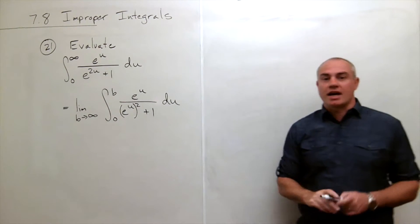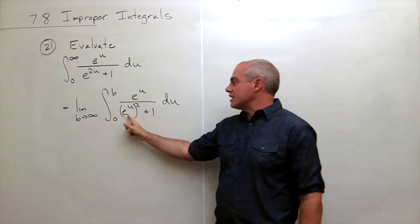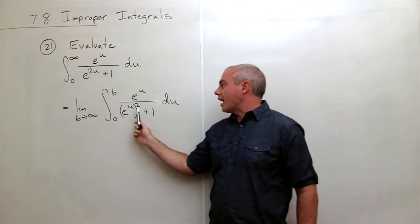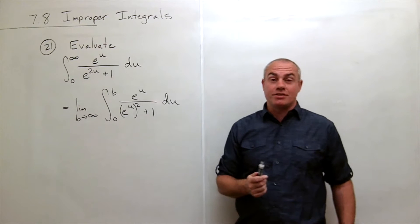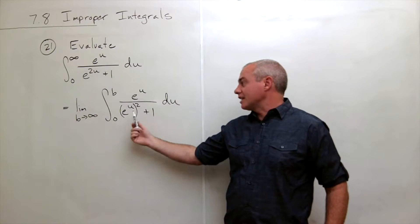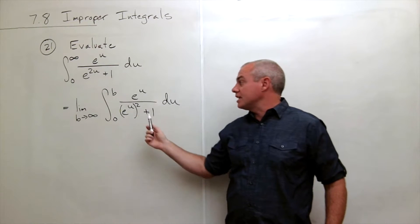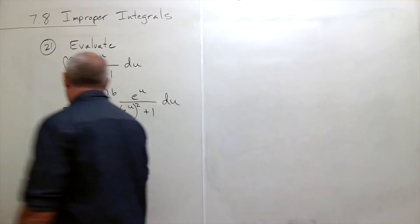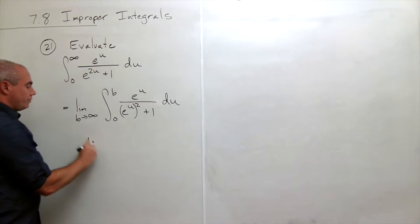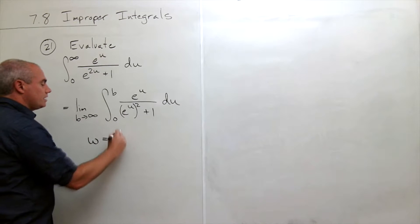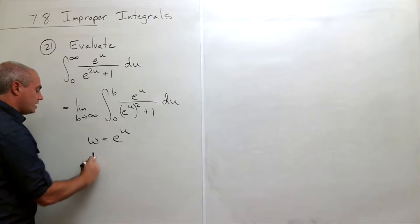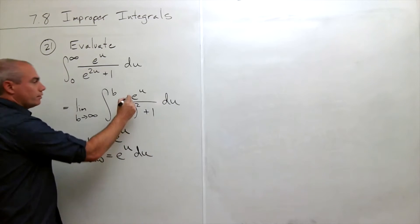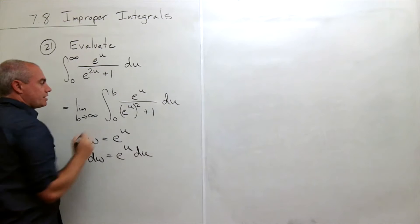Alright, so I rewrote this and the reason I wanted to write this as e to the u squared is because e to the u squared I can make a very nice substitution here. I'm going to let w be e to the u, and then the derivative will be e to the u which is perfect. So I'm going to let w be equal to e to the u, so dw is going to be e to the u du, which is exactly what I have on the top.